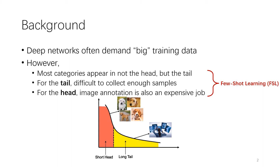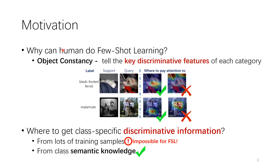Let's first think about why humans can do few-shot learning. The reason is that our recognition system can perform object constancy, which is the ability to identify objects across changes in context like illumination and backgrounds. This means humans can identify the key discriminative features concerning a category. Where to get this class-specific discriminative information? For categories with enough samples, the discriminative features can be concluded from lots of upstream examples. But for categories with few images, humans can also get which key features should be focused on from high-level guidance of semantic information such as class name.